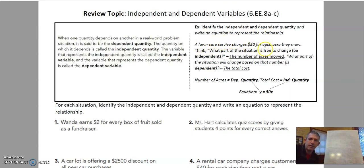A lawn care service charges $50 for each acre they mow. Well, the amount we will spend or we will pay for this lawn care service depends on what? The cause is how much they mow. The effect is the amount of money is going to go up. Cause and effect. So the number of acres mowed is the independent and the part of the situation that changed based on the number, the effect, is the total cost. So numbers of acres is the dependent quantity. Total acres is the independent quantity.